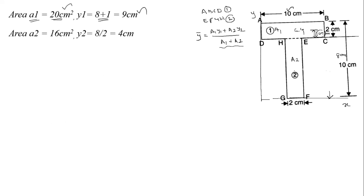Area 2 equals L×B = 8×2 = 16 cm². Y2 is the center of gravity of rectangle 2. Since the total height of section 2 is 8 cm, its CG is at 8/2 = 4 cm from the bottom.